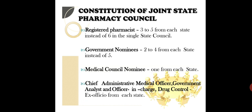The joint state pharmacy council is specified when 2 states are working in collaboration with each other. In a joint state pharmacy council, for registered pharmacists we have 3 to 5 from each state instead of 6 in a single state council. For example, if we have UP and MP, there will be 3 from UP and 3 from MP, composing 6 members total.